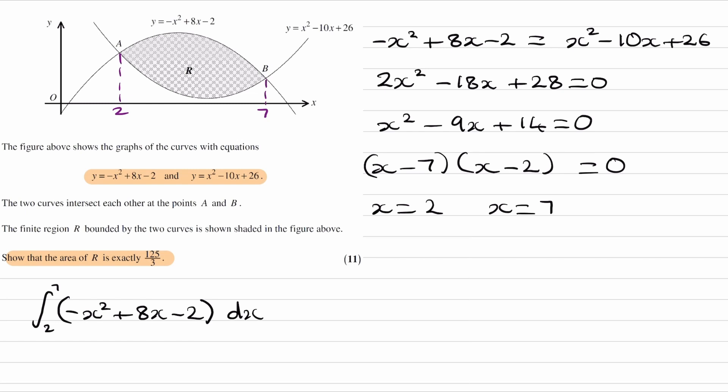That would give us, on this diagram, that would give us this region which I'm going to shade in purple. This bit here. Integrating a curve between two x coordinates gives you the area between that curve and the x axis. So integrating the top curve will give you the purple region.